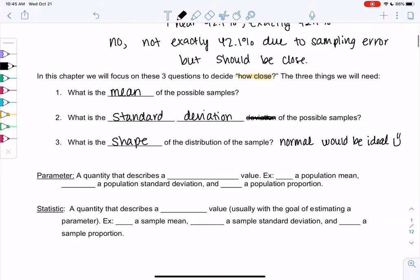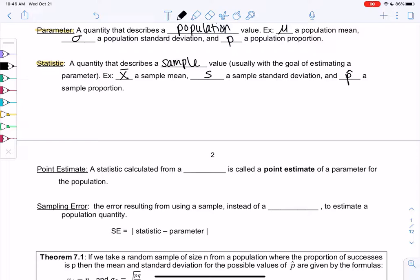Let's add a couple definitions before we get started in an example. A parameter is a quantity that describes a population value. Population values are things like mu for the population mean, sigma is a population standard deviation, and p is our new one for a proportion. And then statistics are what we kind of calculate in class, those are things that come from samples. A quantity that describes a sample value, usually with the goal of estimating a parameter. So x-bar is an example, that's our sample mean. S is a sample standard deviation, and then our new one is p-hat for our proportion.